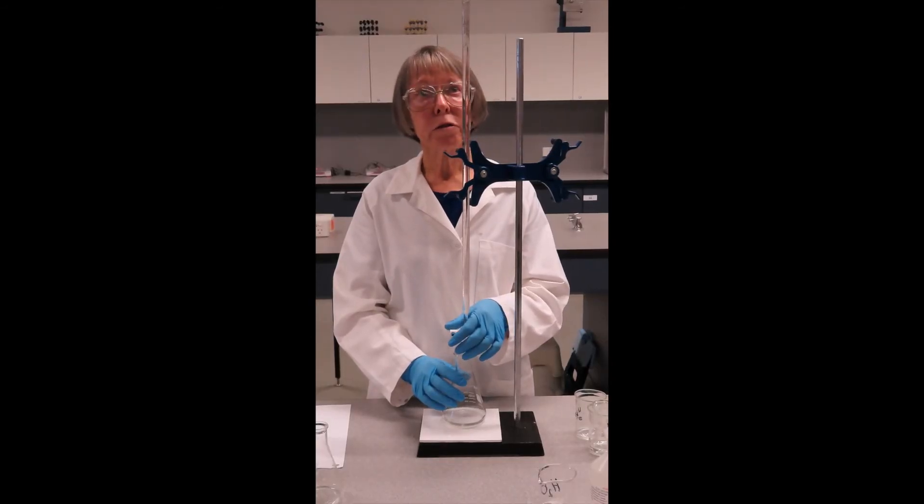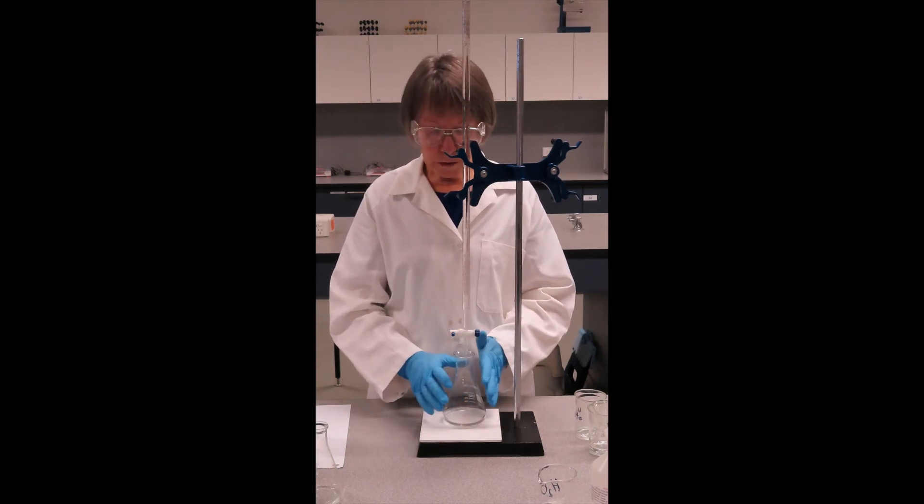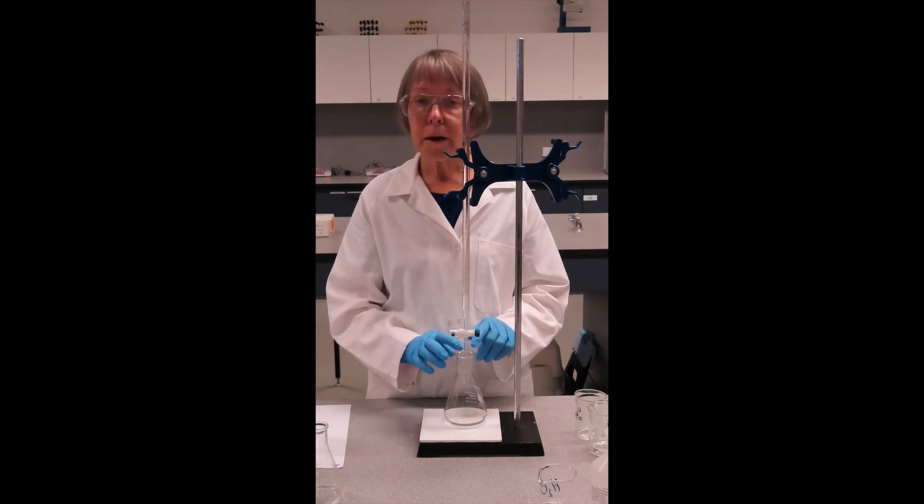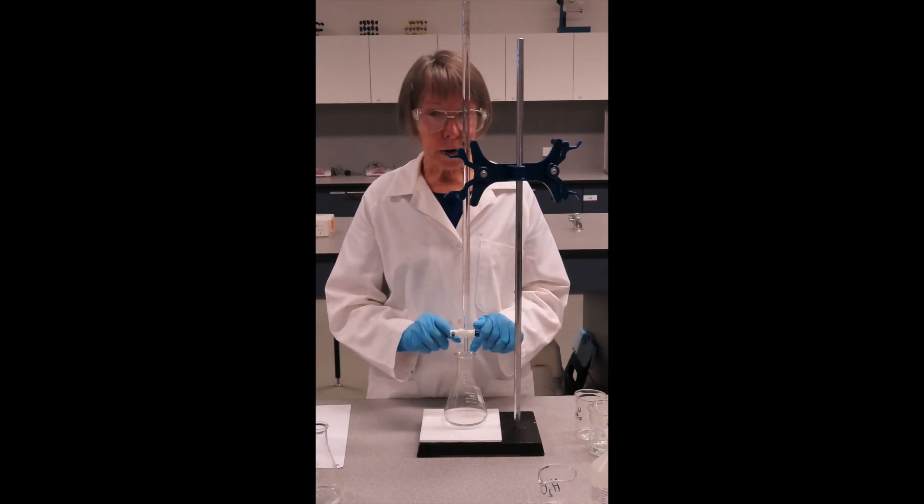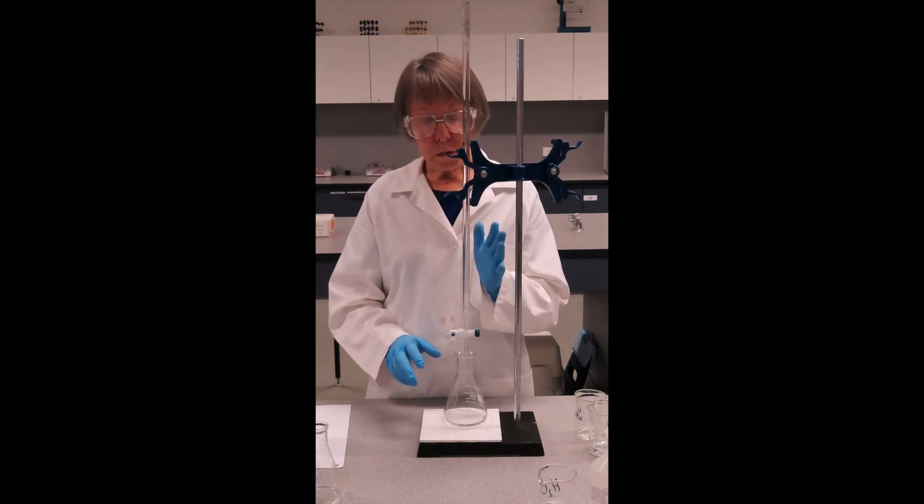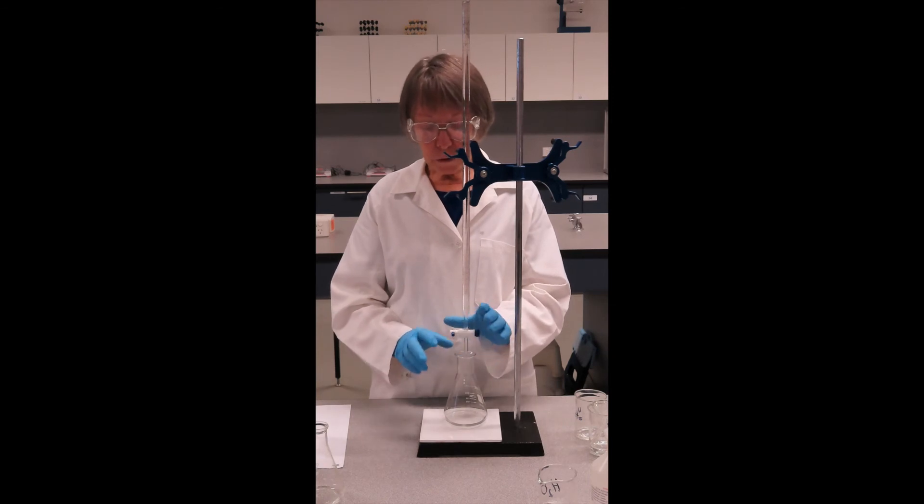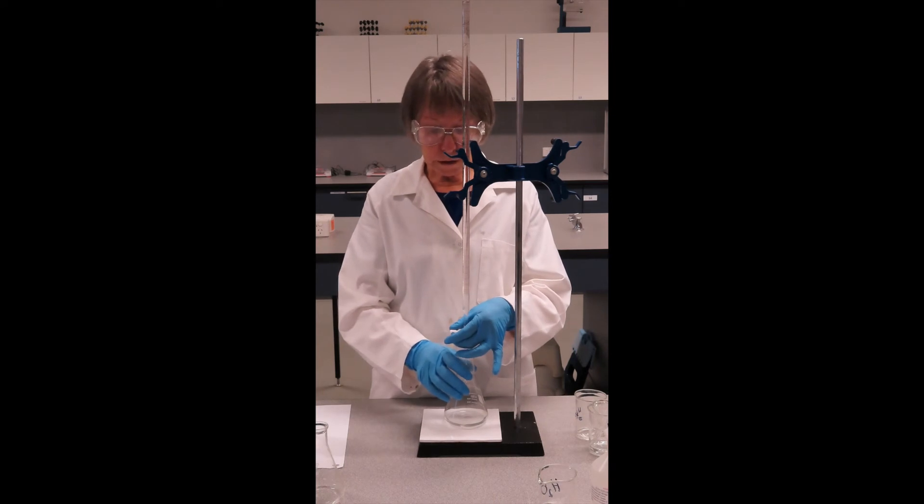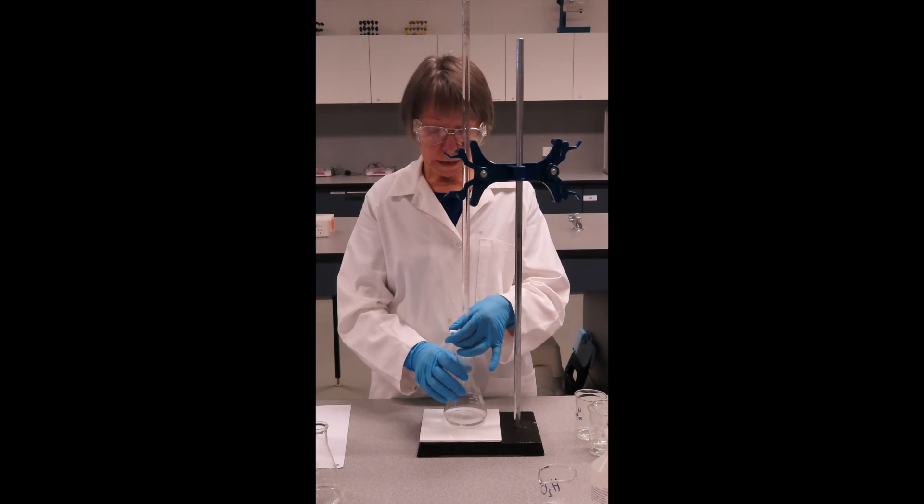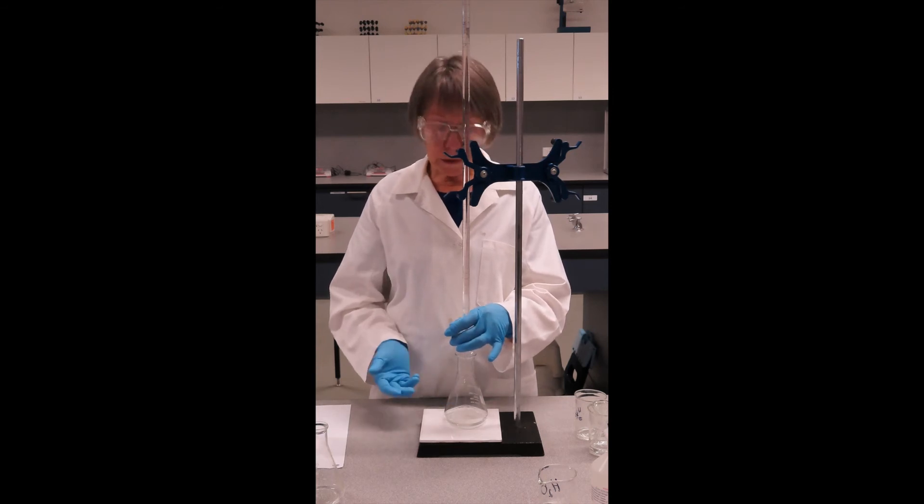I will now show you how to do the actual titration. You'll see that I have my flask underneath the burette. The tip of the burette is inside the neck of the flask, but not too far down. The classical procedure is to use your left hand to operate the tap, so that your thumb is facing you, your fingers are wrapping around the other side. Your right hand will swirl the flask as you run the base in. So the fine tip allows us to add base in a fairly controlled manner. So at the moment I'm simply allowing it to run in.